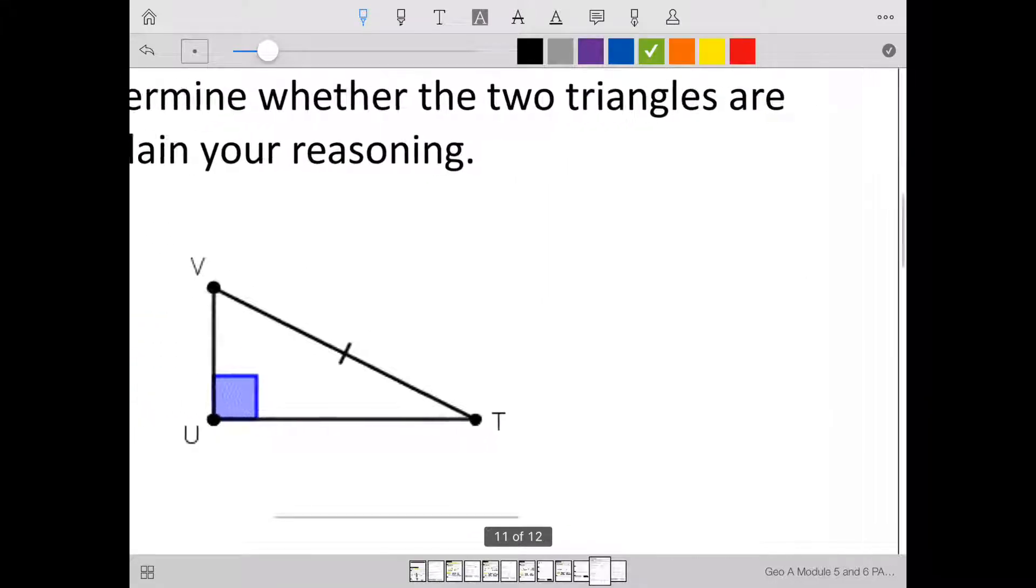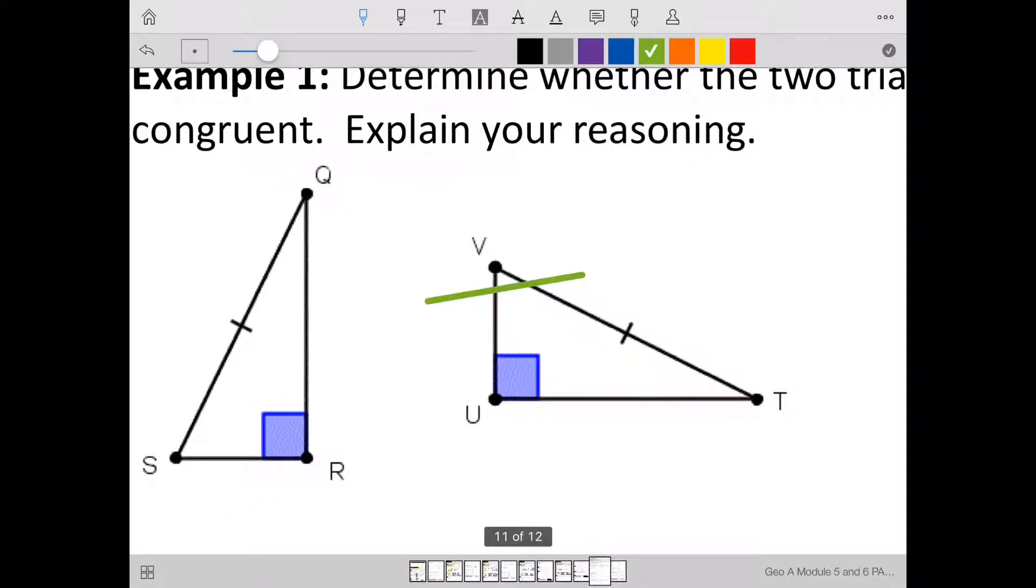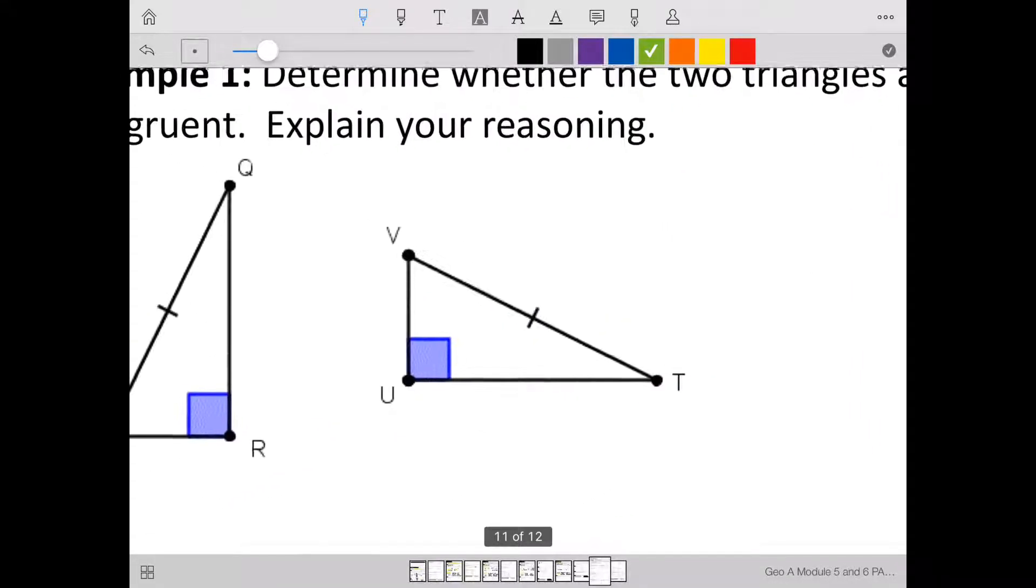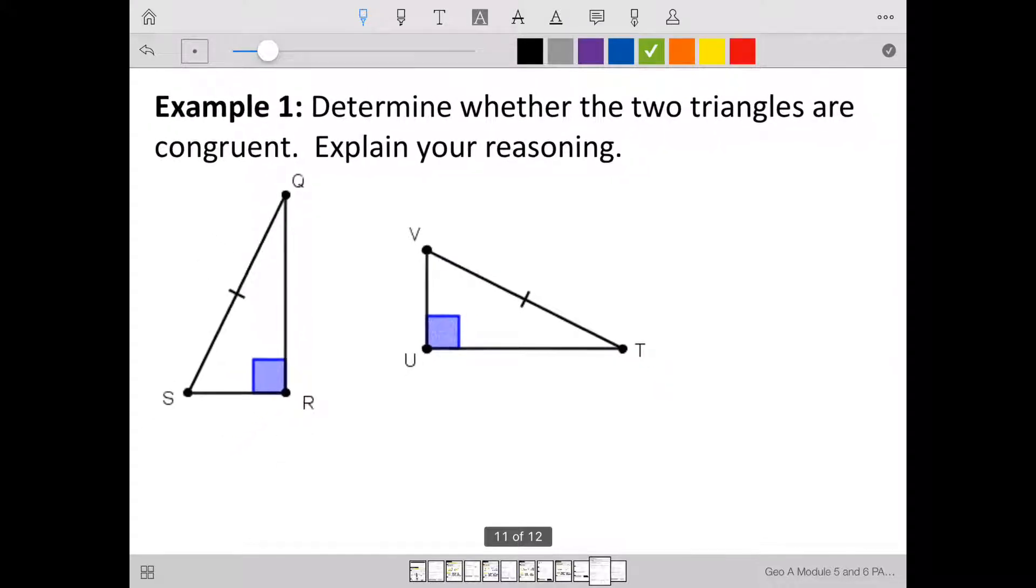Let's look at example one. Determine whether the two triangles are congruent. Explain your reasoning. Well, first, we have a right angle. That's important. Now we need to check if we have the hypotenuse and at least one leg matching up, or being congruent.